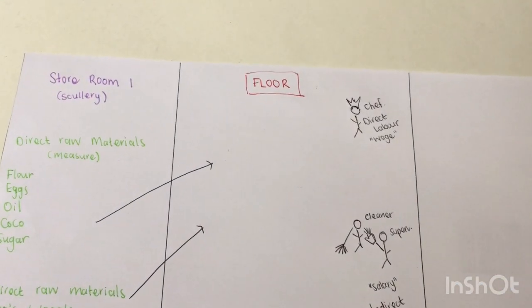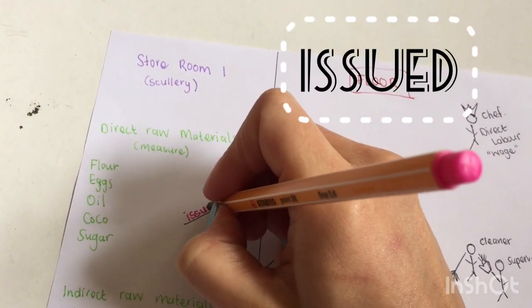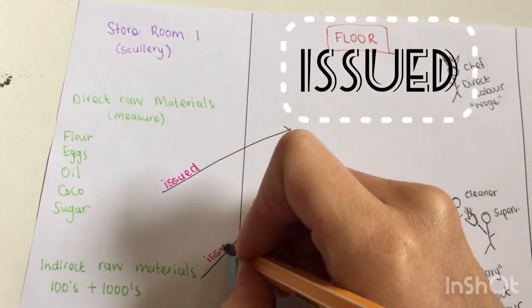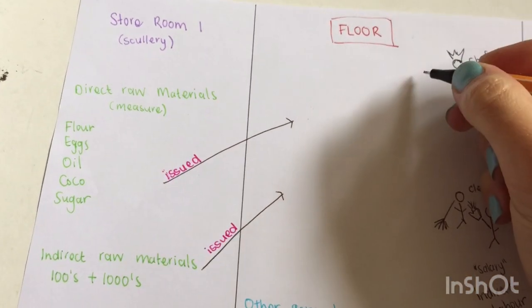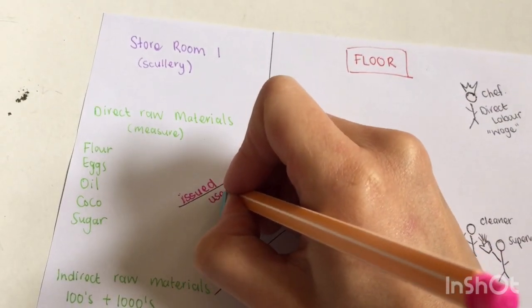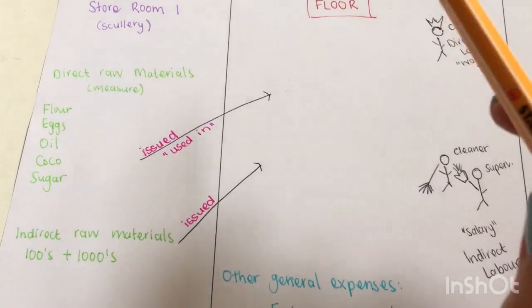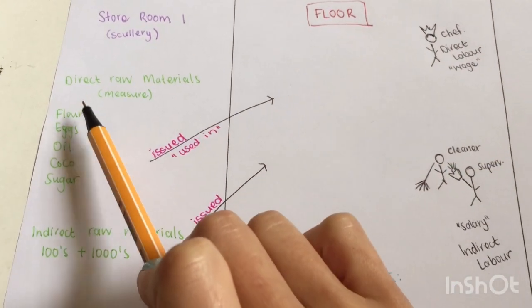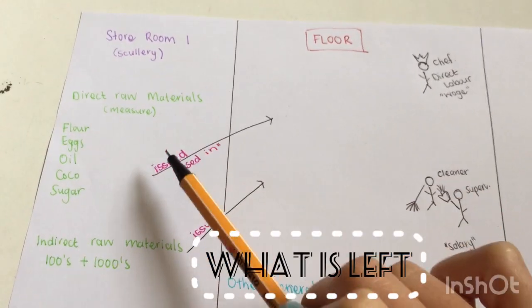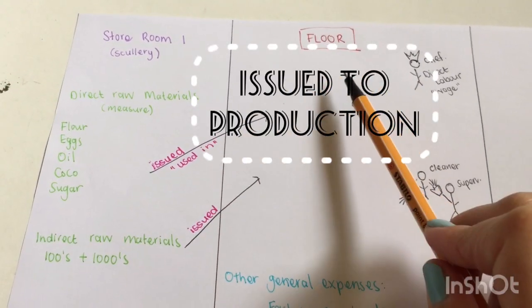Now this is very important because in all your activities they're going to use the term raw materials or indirect raw materials issued to the factory or issued to production. Other times, sometimes they also talk about used in production. It's very important to make a distinction as to what is there, what you bought extra, what is left afterwards, and what is issued to the kitchen to bake cakes.